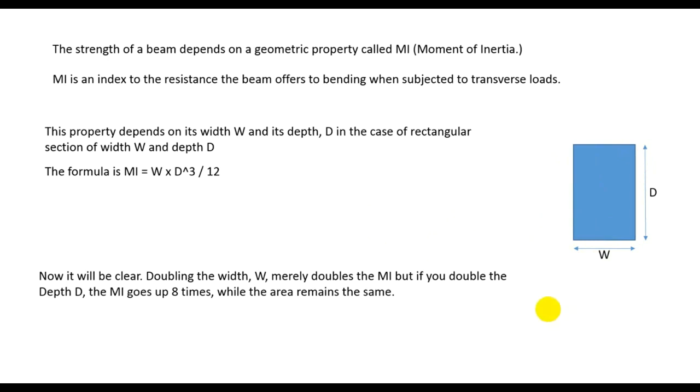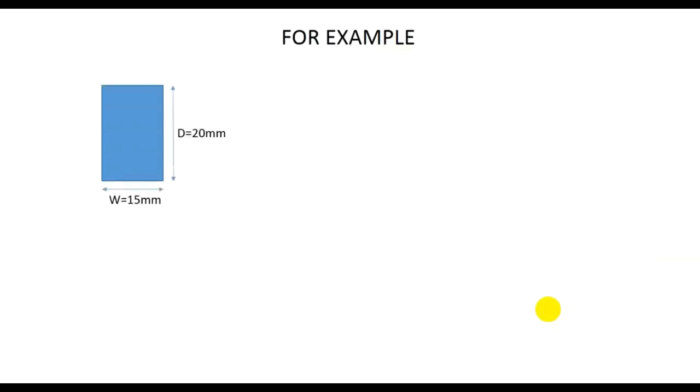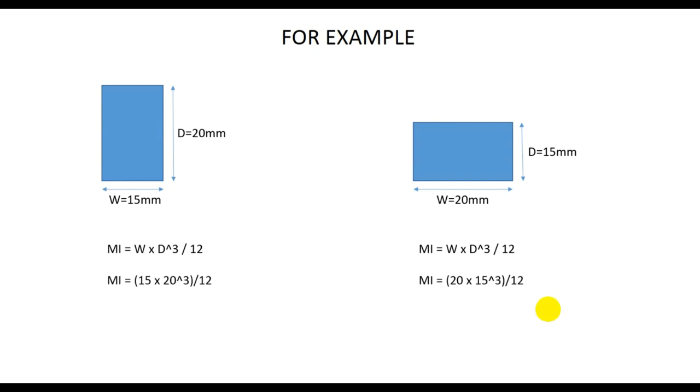So if we go next, for example, suppose this is a beam and its depth is 20 millimeter and width is 15 millimeter, and width is 20 millimeter. So if we see here, MI equals that equation, so if we use that equation and here we have inputted the value.